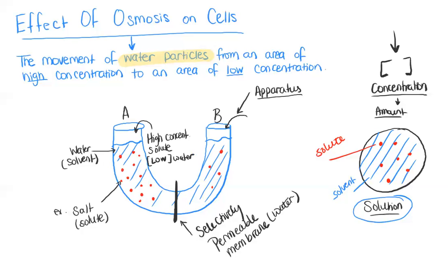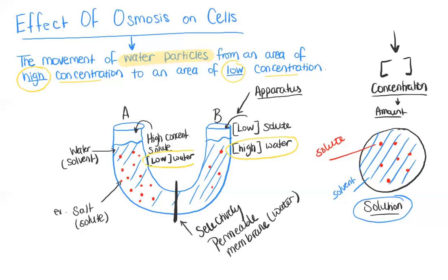Now let's look at side B. For side B we have the opposite — we have much less solute, so a low concentration of solute and a high concentration of water. So according to our definition of osmosis, water is going to move from an area of high concentration to an area of low concentration of water. We have a high concentration of water on side B and a low concentration of water on side A. And therefore, since this selectively permeable membrane allows water to pass through, water will move from side B to side A.